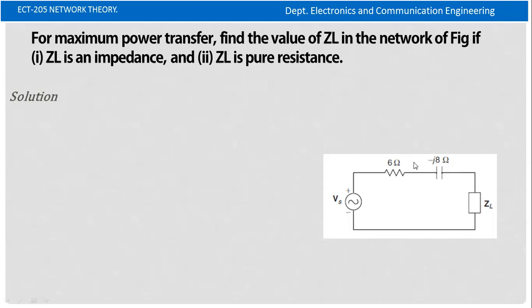We have the Zs value. This is the source impedance value. It is 6 minus j8. So the Zs value is R minus j8.